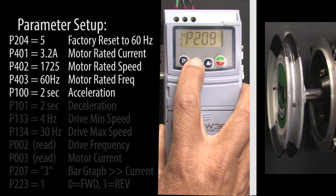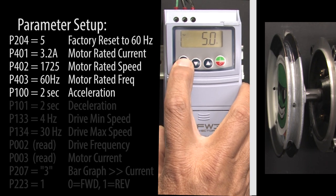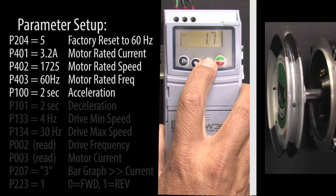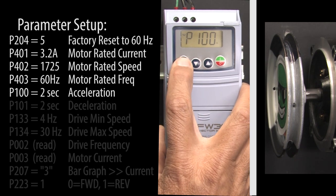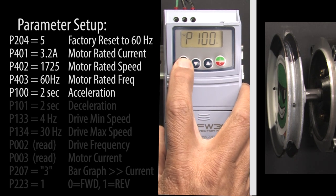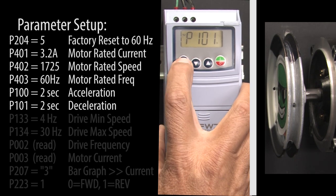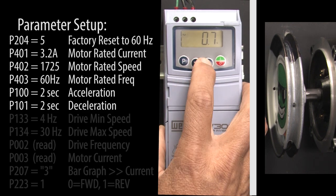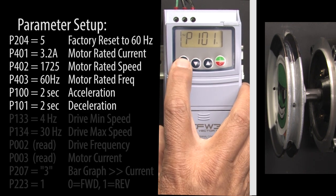Scroll to the acceleration parameter, which is 100. Hit P to change it — I'll change it to 2 seconds and hit P to accept that value. Scroll to the next parameter on our list, hit P and change the deceleration to 2 seconds and hit P to accept that.